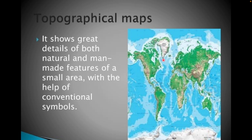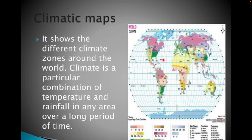In the climatic map, which is used in various contexts, this map shows temperature, rainfall, sunlight, thunder, or storms. We show all of that through the climatic map.